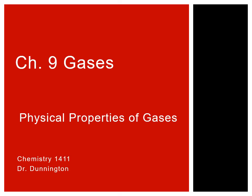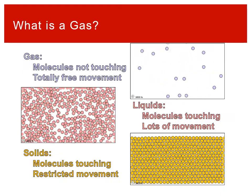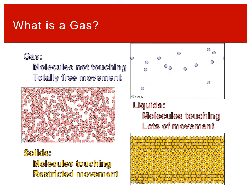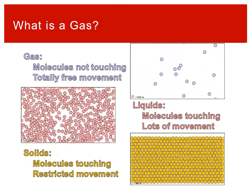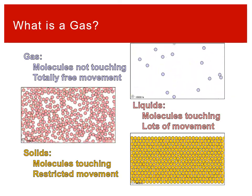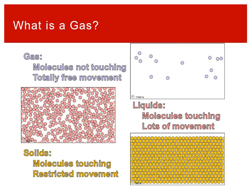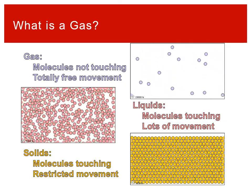Starting off in chapter 9, we want to talk about the physical properties of gases. What we actually want to get into is talking about gases, and what we're going to start off with is talking about what a gas is. Gases are one of our phases of matter.